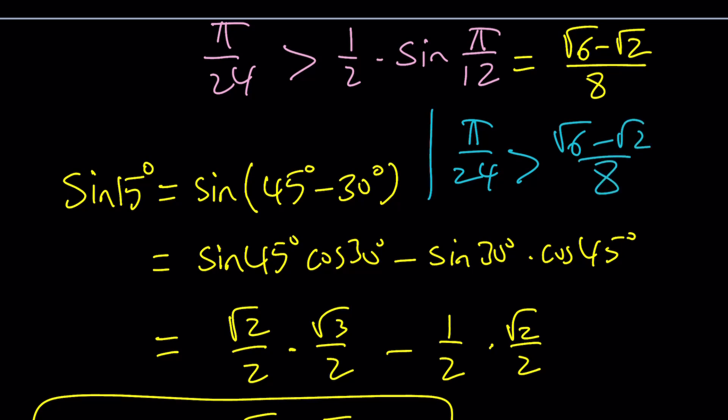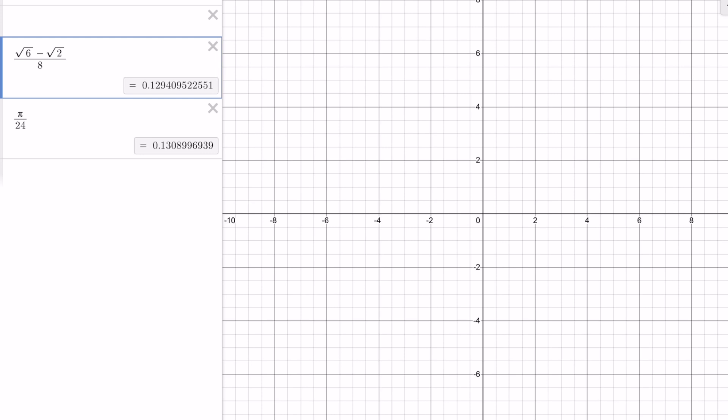So, π/24 is a winner, but let's go ahead and look at the numerical values, right? And as you can see here, π/24 is slightly bigger than √6 - √2 over 8.